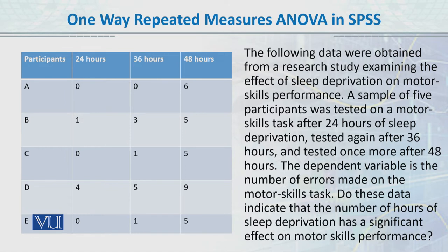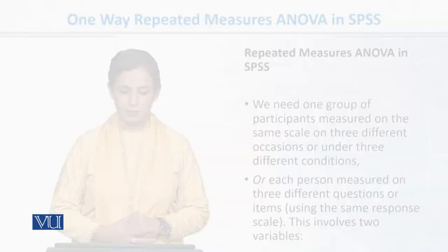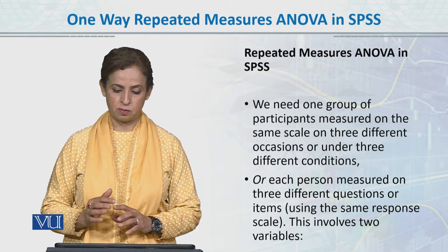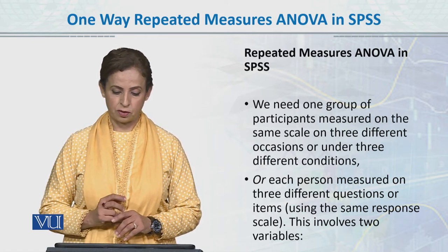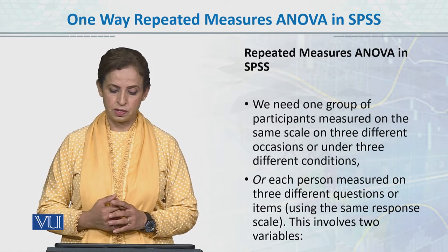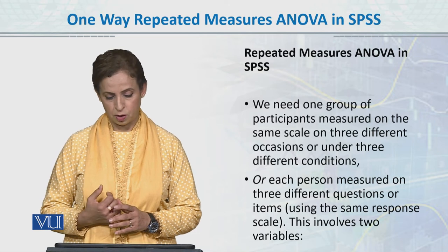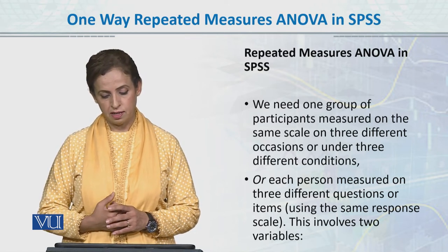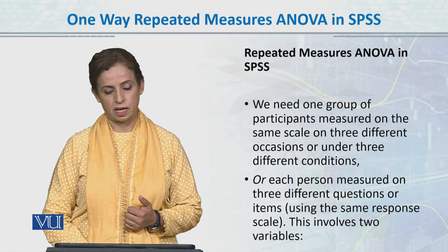We have one dependent variable — the errors on the motor skill task — and one independent variable, sleep deprivation, which has three levels: 24 hours, 36 hours, and 48 hours deprivation. We have repeated measures. This is an example of one-way repeated measures ANOVA — one way because we have one key independent variable. We need one group of participants measured on the same scale on three different occasions or under three different conditions.